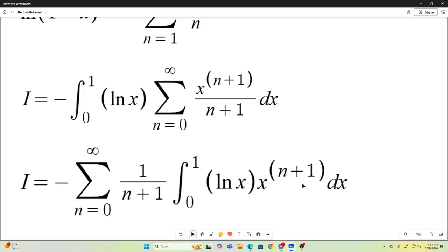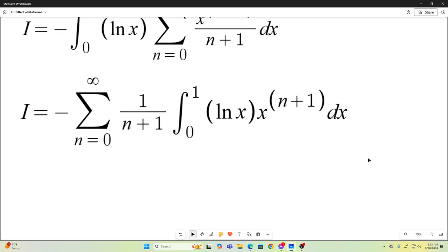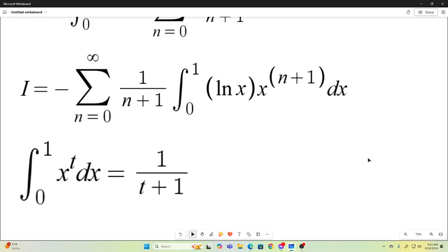So, now we just need to evaluate this integral. And we can do that without Feynman integration. But since this is a channel on Feynman integration, we're going to use it. Let's first recognize that the integral from 0 to 1 of x to the t dx is 1 over t plus 1.